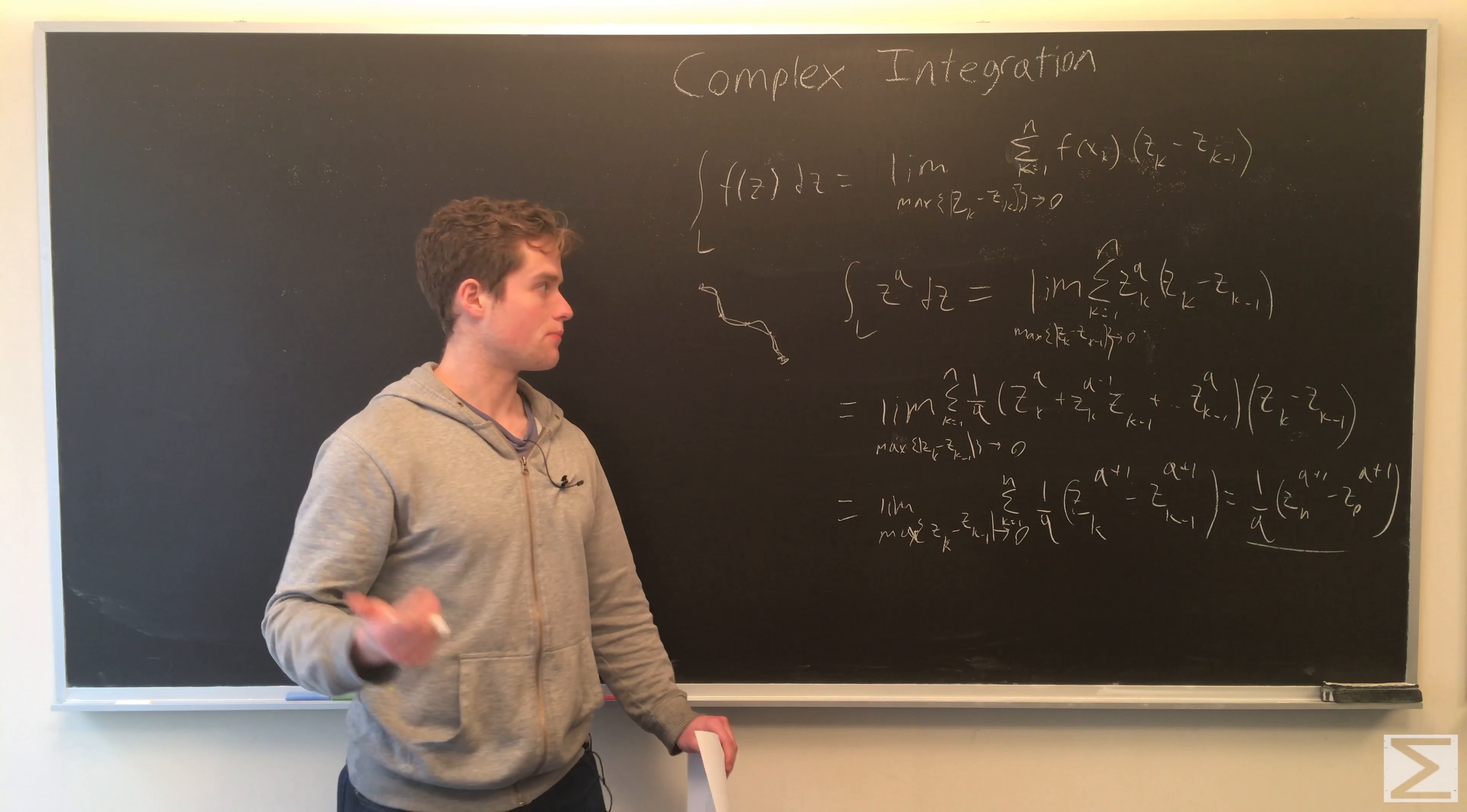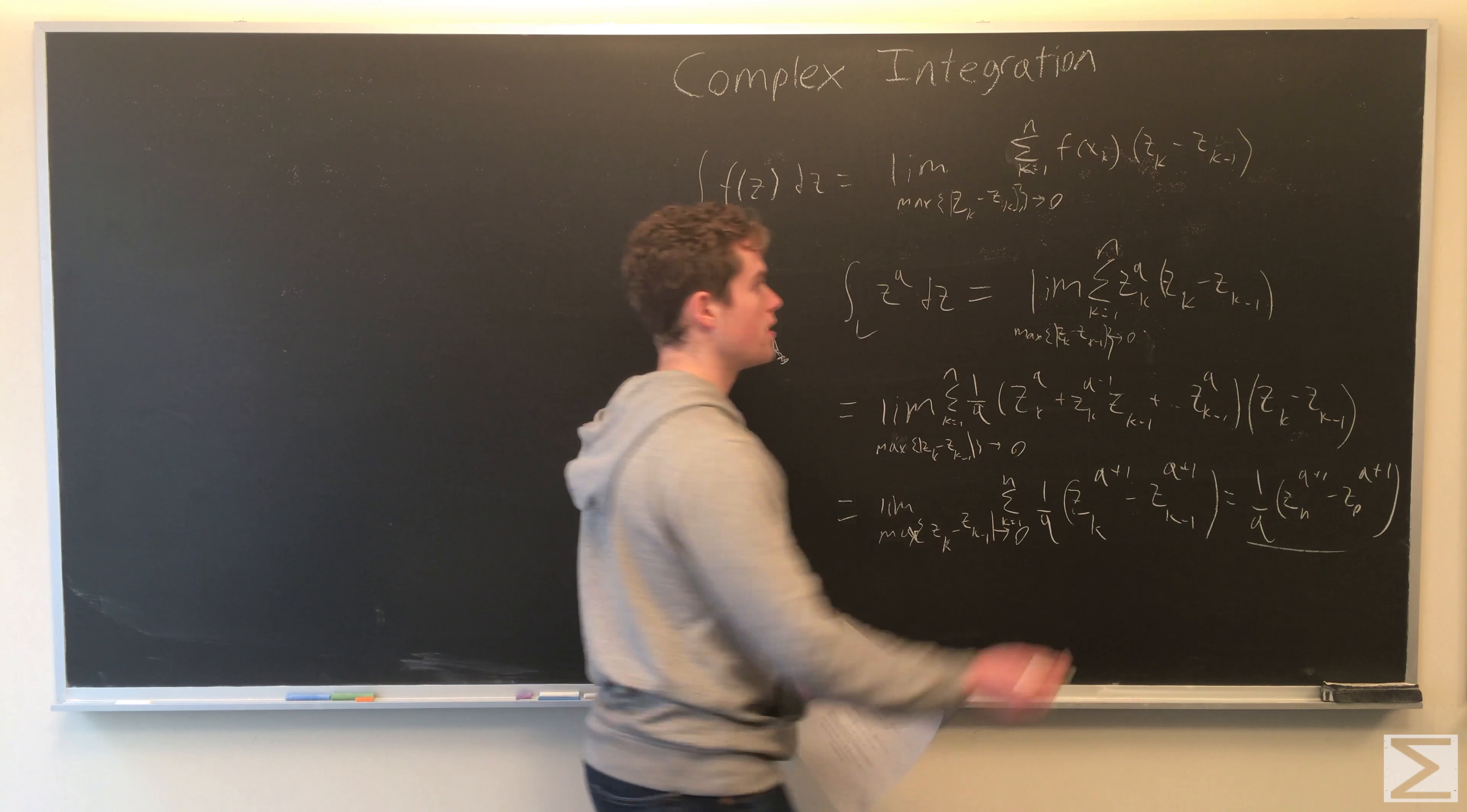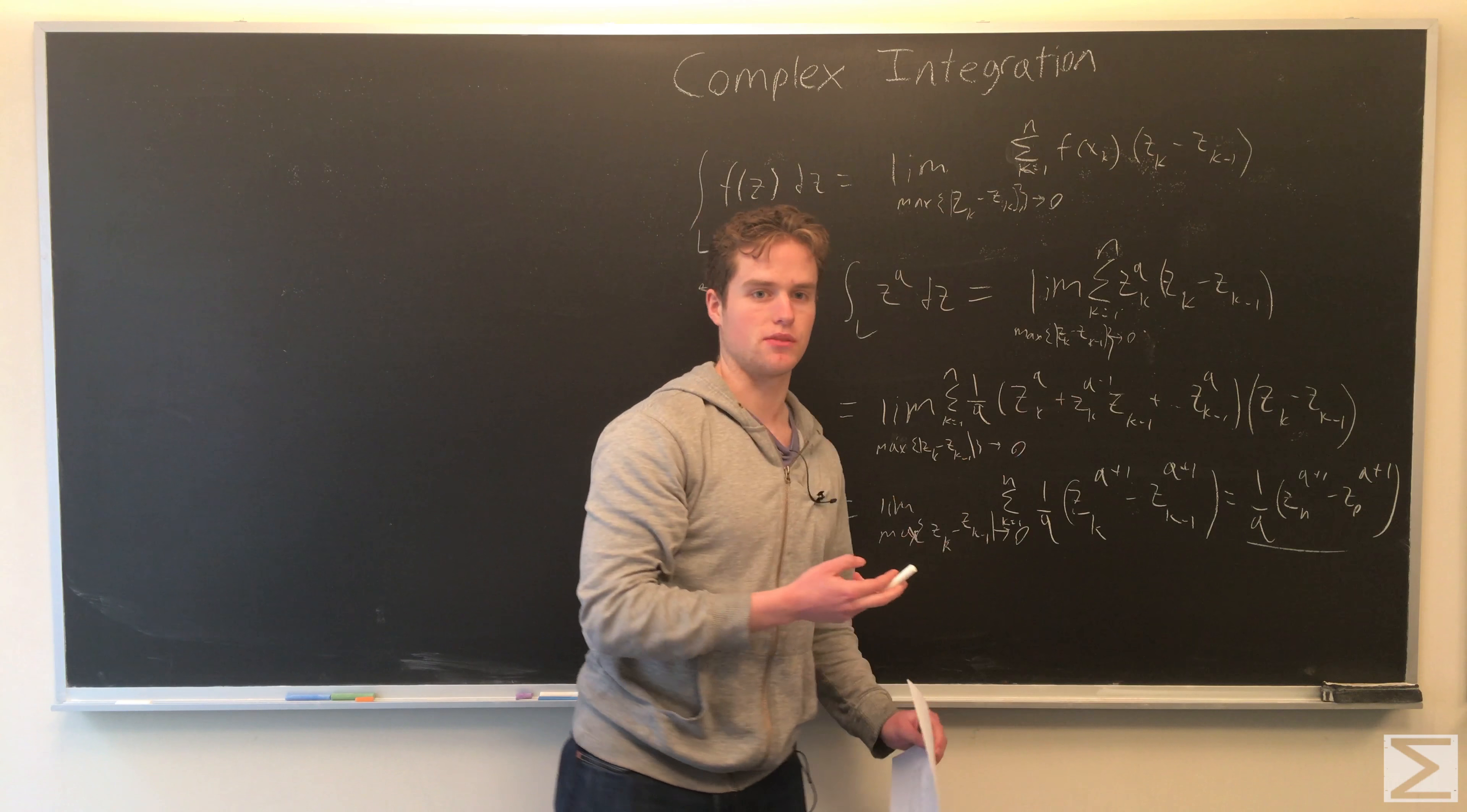We want the limit of the sum. As we add more and more points and the distance between each point goes to zero, it approaches some value. For our point between our partition points, we have z_k to the cube. Note that we can replace this with z_k to the cube minus z_{k-1} to the cube, or z_k to the p minus z_{k-1} to the p.